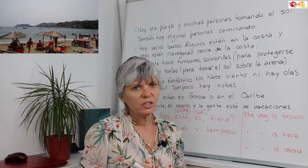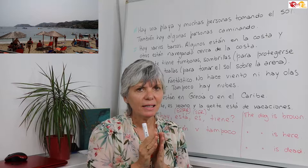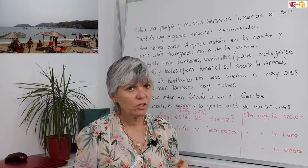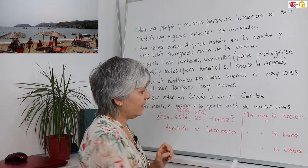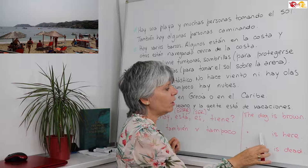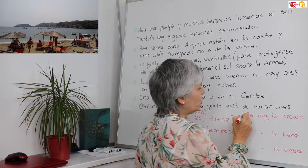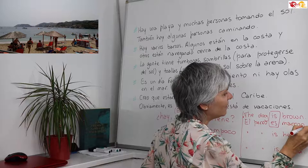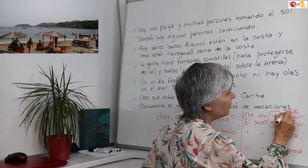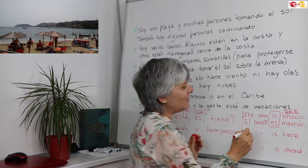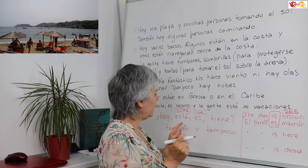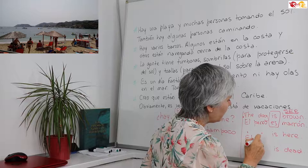If somebody tells you that in Spanish we use ser for permanent situations and estar for non-permanent situations, this person doesn't know Spanish at all. Compare these sentences: 'The dog is brown' — el perro es marrón, using the verb ser. We use this form because this is an essential feature. But when I say 'the dog is here,' I'm talking about location, so I say El perro está aquí.